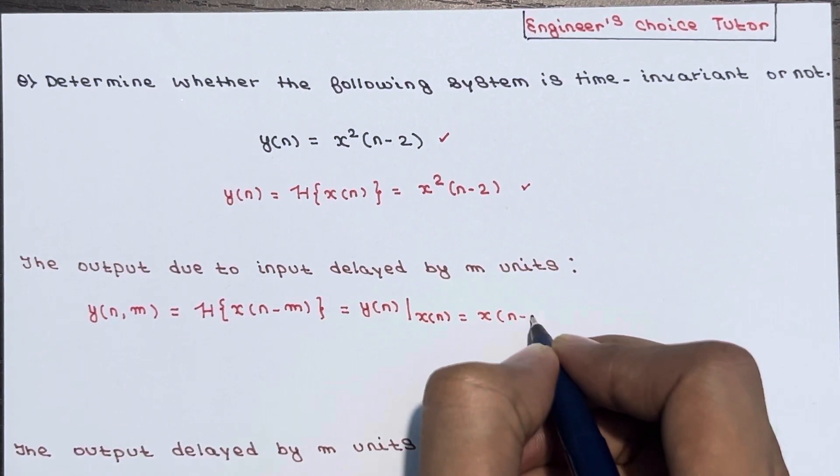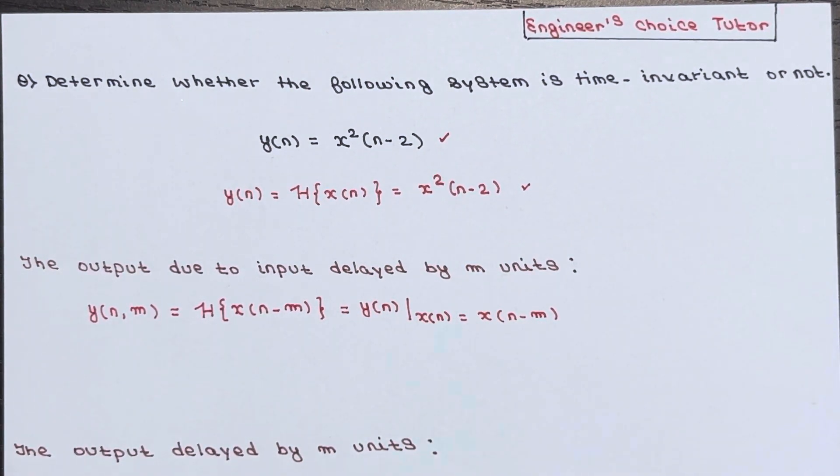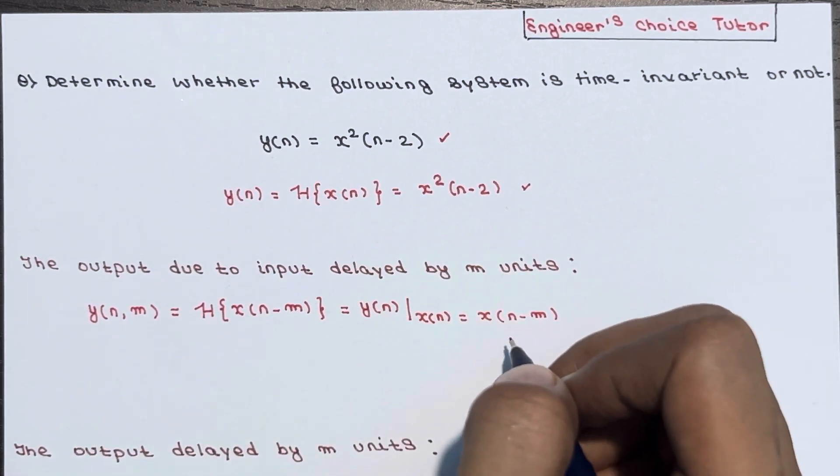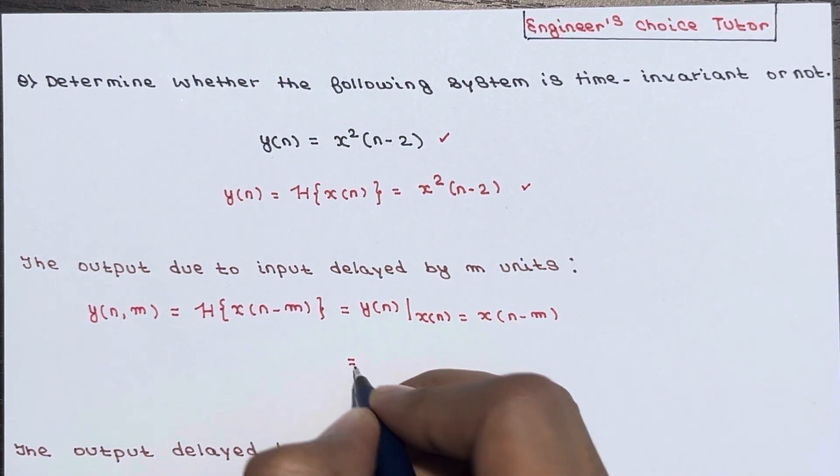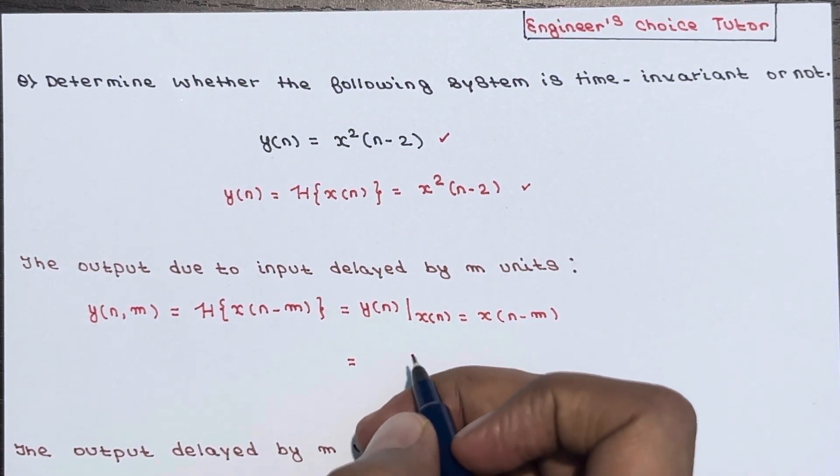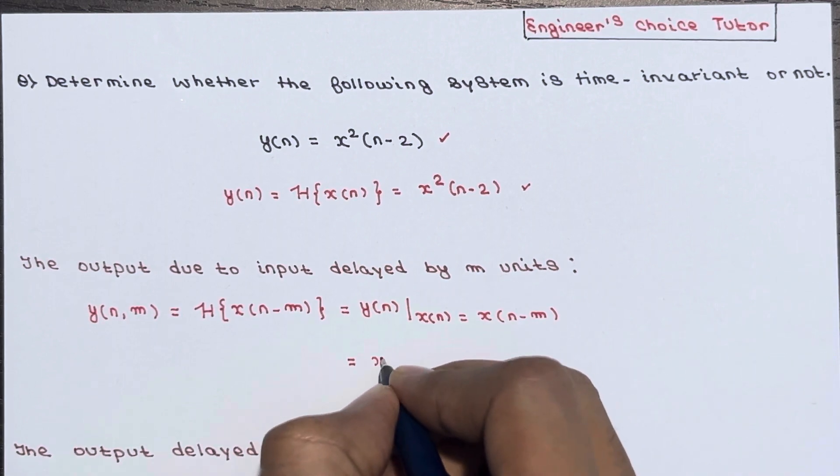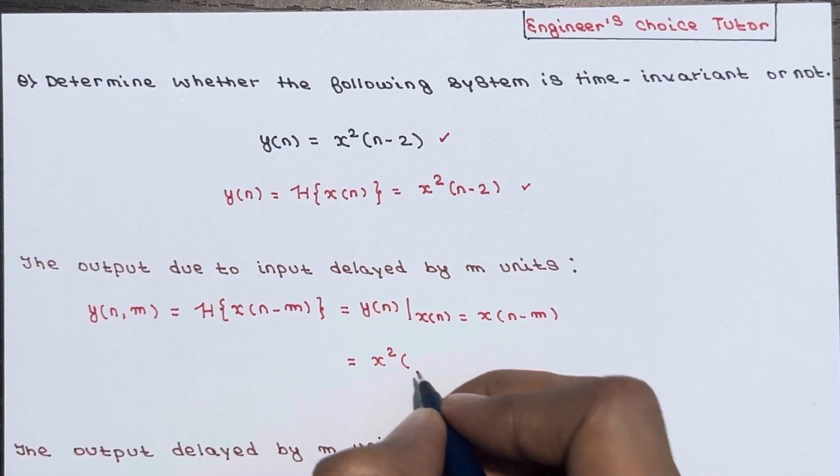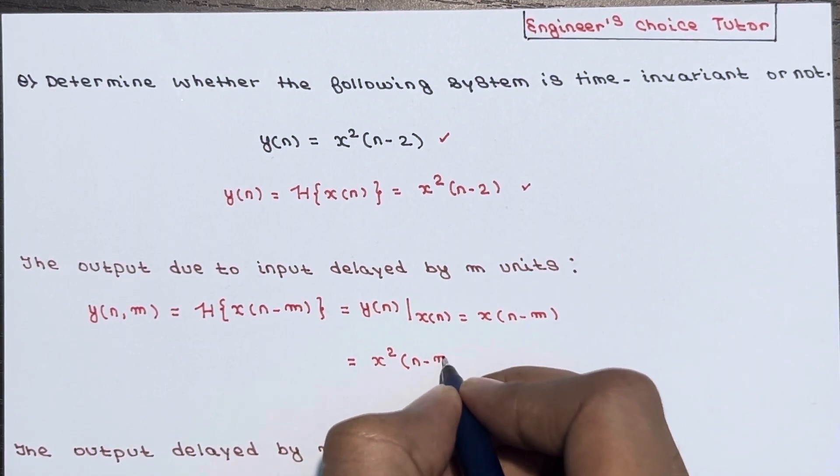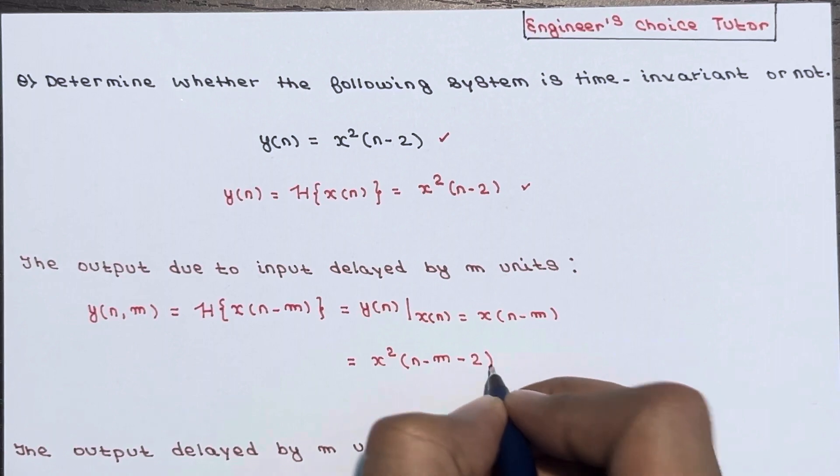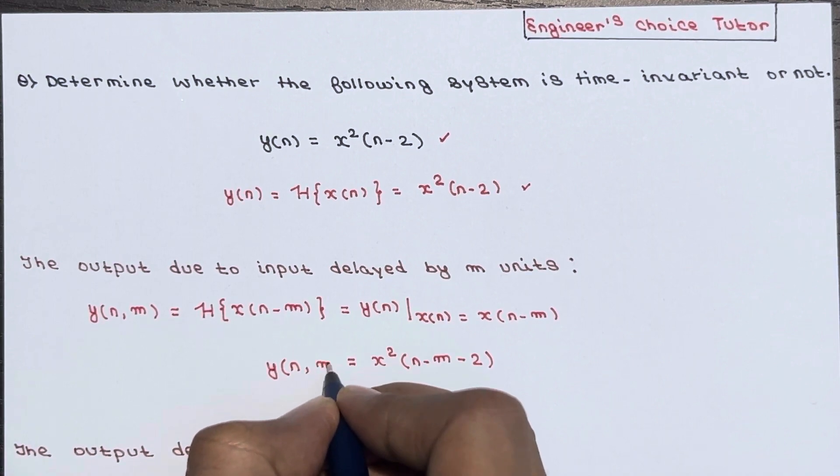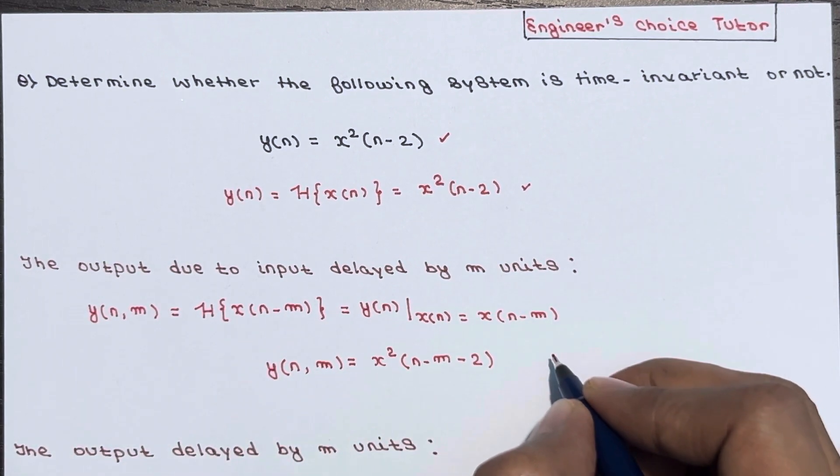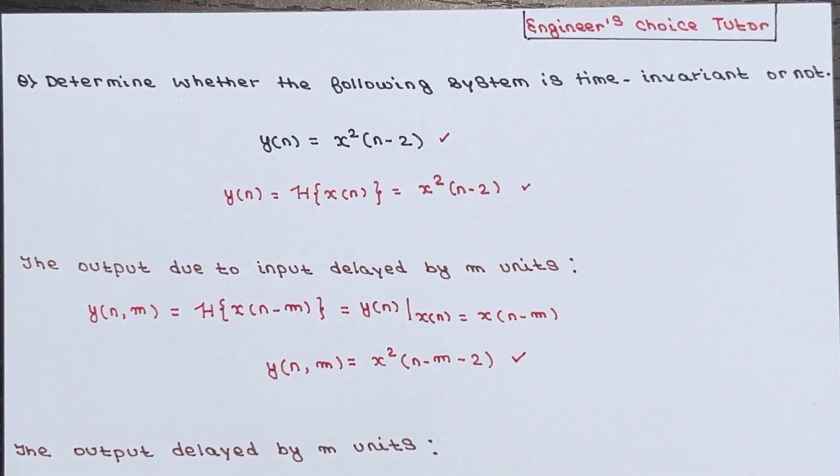So this is basically y(n) when x(n) is equal to x(n-m). So instead of x(n), you have to place x(n-m). So this will become x²(n-m-2). So this is y(n,m), the output due to input delayed by m units. We have calculated this successfully.